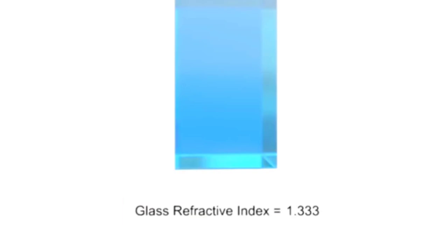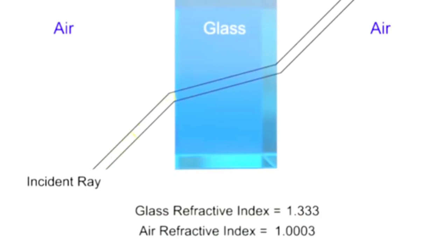The refractive index of air is 1.0003. Anytime a light beam travels from a medium with a low index of refraction, like air, to a medium with a higher index of refraction, like glass, the beam of light will bend toward the normal.